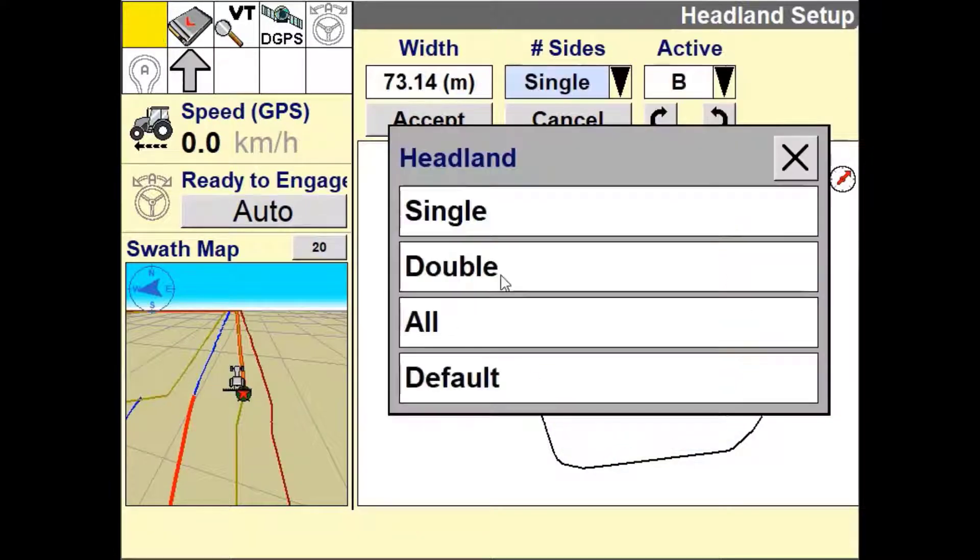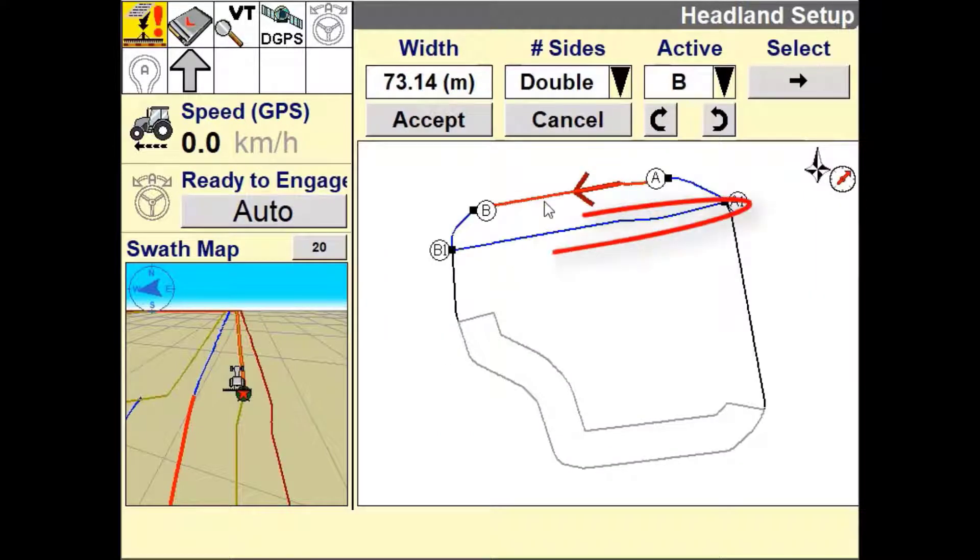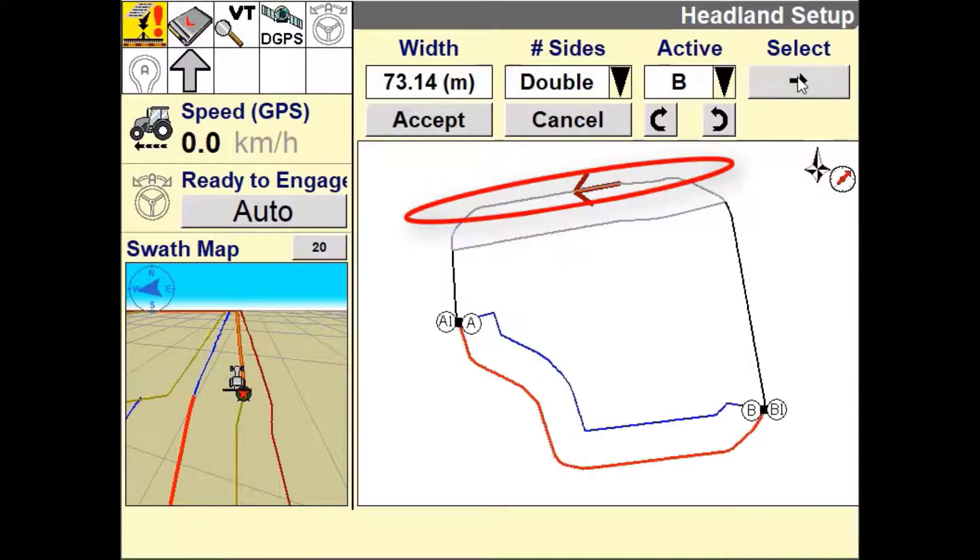If creating either a single or double headland you will need to define the inner and outer edge. The inner edge is represented as A1 and B1 whereas the outer edge or field boundary is defined between points A and B.